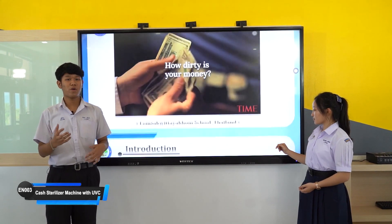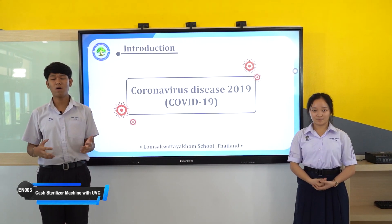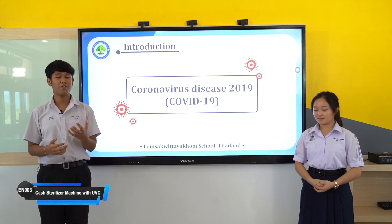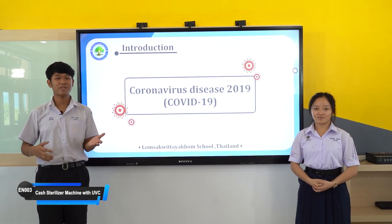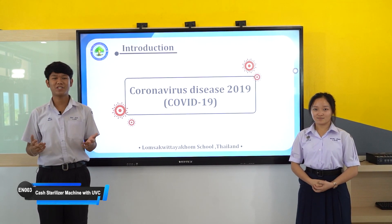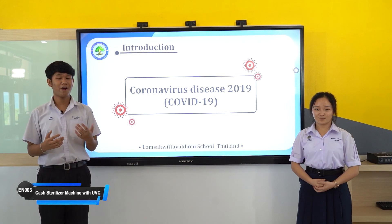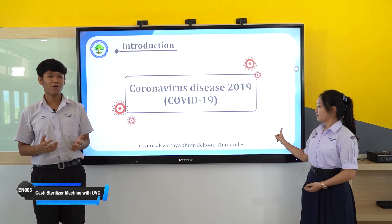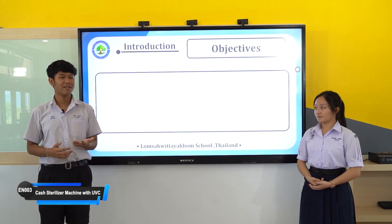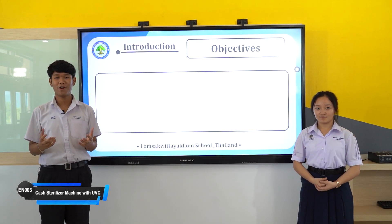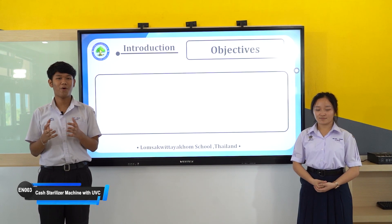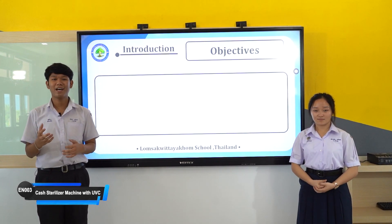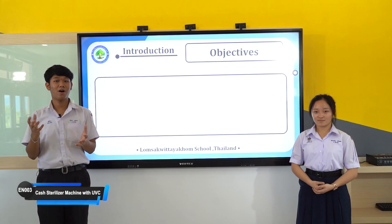In the midst of coronavirus disease 2019, also known as COVID-19, which has spread very widely, people still have to shop regularly. Banknotes and coins used for making purchases quickly may contain viruses or pathogenic microorganisms. So our group invented a sterilizer machine for disinfecting pathogenic microorganisms, because UVC rays can effectively inhibit the growth of them.